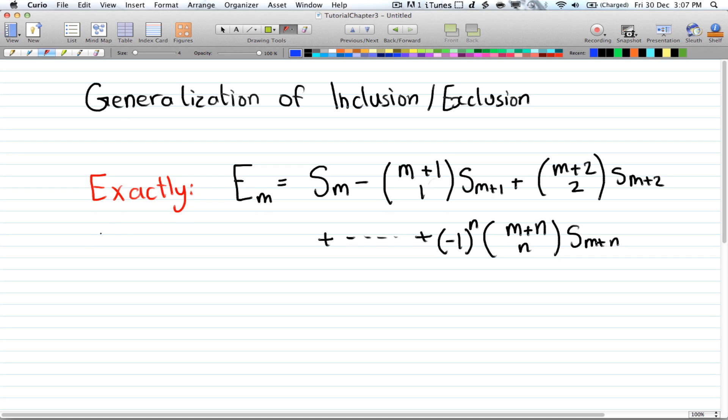The first is exactly. So when you're asked exactly something, the formula for that is e_m or e sub m equals s sub m minus (m+1) choose 1 times s_(m+1) plus (m+2) choose 2 times s_(m+2) and so on and so forth.